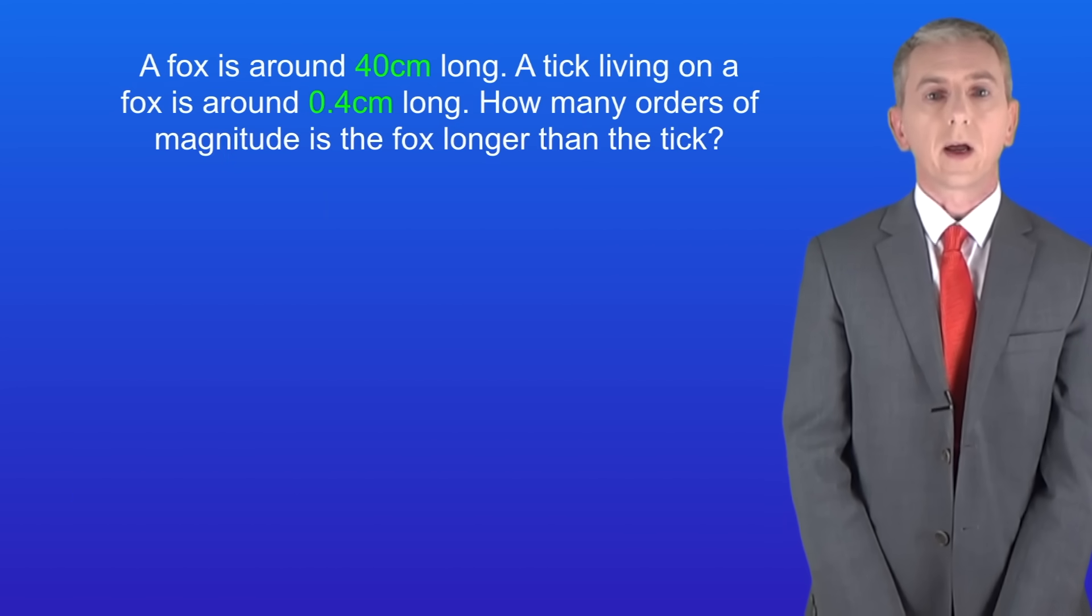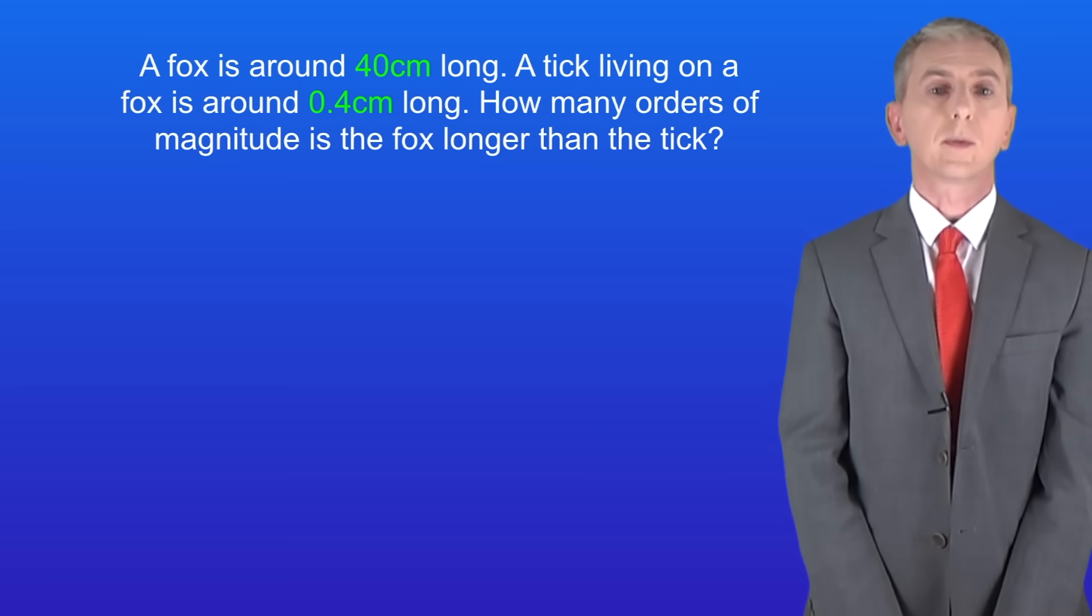Here's a question for you to try. A fox is around 40 centimetres long. A tick living on a fox is around 0.4 centimetres long. How many orders of magnitude is the fox longer than the tick? Pause the video and try this yourself.